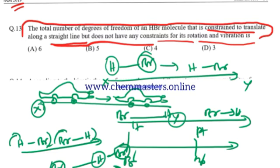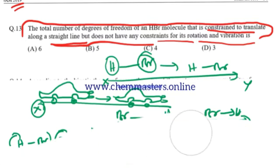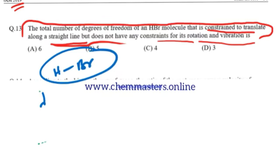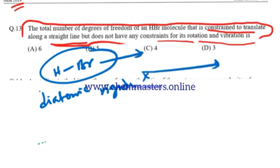After observing, HBr is considered as a diatomic rigid molecule because its motion is restricted along a straight line from X to Y. We can say there is no internuclear changes, so it is a rigid diatomic molecule.